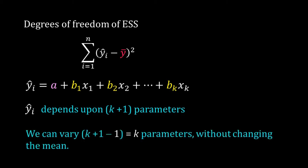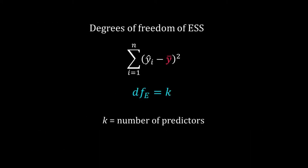The answer is k plus 1 minus 1, that is k. So the degrees of freedom of ESS is k, the number of predictors or independent variables in your regression model.